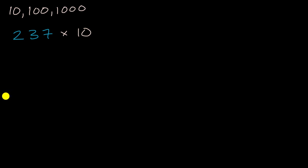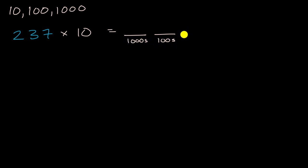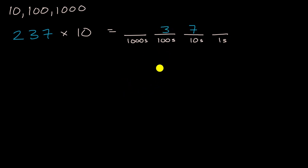Pause this video and see if you can have a go at it. One way to think about it is this is 237 tens. So if I put my place values here — the thousands place, the hundreds place, the tens place, and the ones place — well, if I were to say seven tens, I would put the seven in the tens place. If I were to say 37 tens, I would write it like this, because 30 tens is three hundreds. And if I were to say 237 tens, I would write it just like that, because two hundred tens is two thousands.